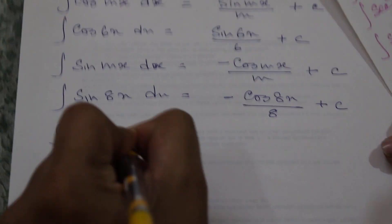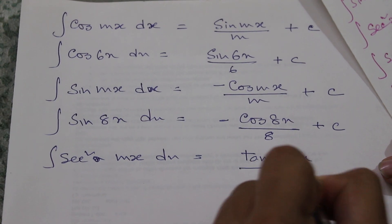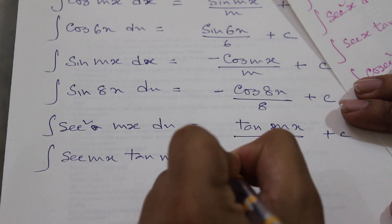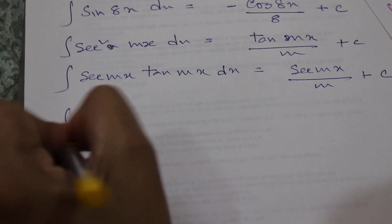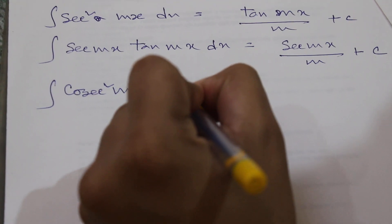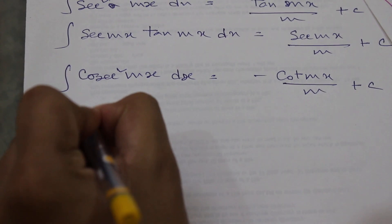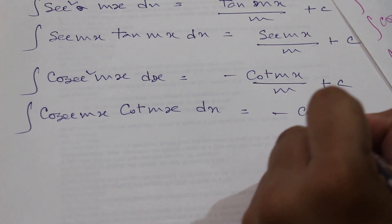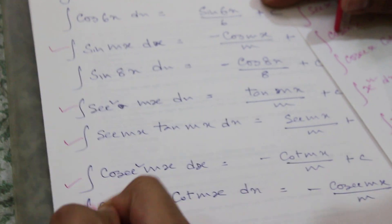For sec squared mx dx, we get tan mx divided by m, plus c. For cosec squared mx dx, we get negative cot mx divided by m, plus c. For cosec mx cot mx dx, we get negative cosec mx divided by m, plus c. These are the formulas, and the numerical examples shown are illustrations.